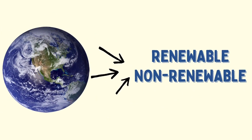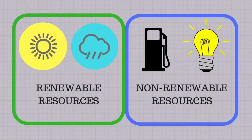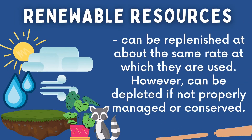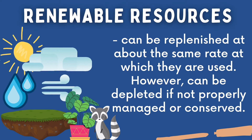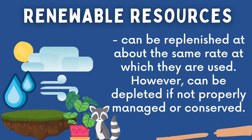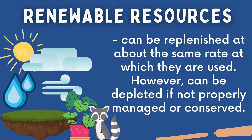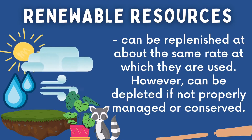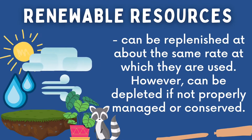Natural resources can be classified into two: renewable resources and non-renewable resources. Some of these resources, like small plants, can be replaced quickly after they are used, while others cannot be replaced once used up. Let us first discuss the renewable resources. These are natural resources that can be replenished at about the same rate at which they are used. However, they can be depleted if not properly managed or conserved.